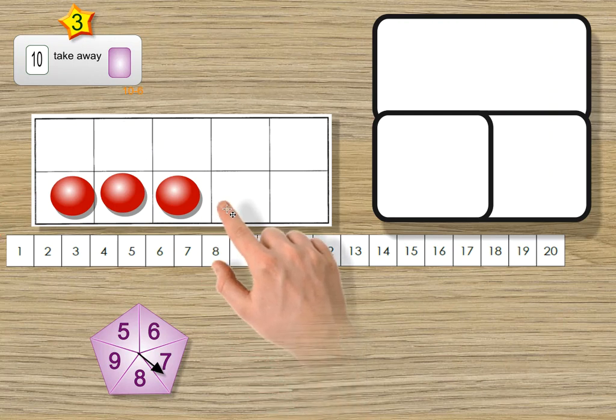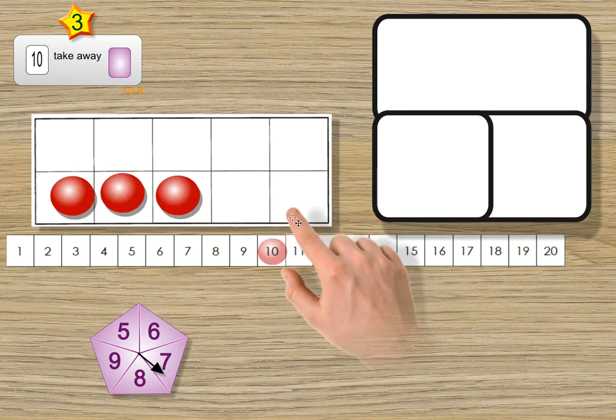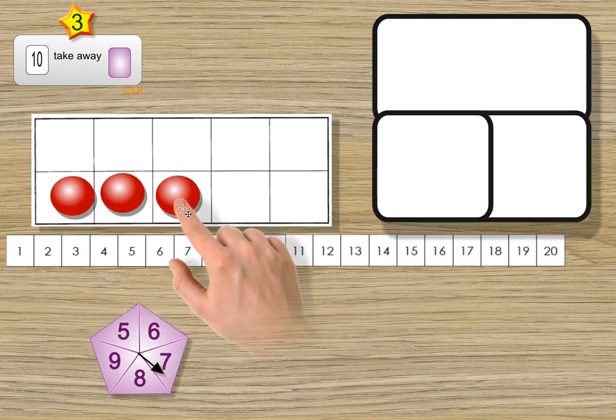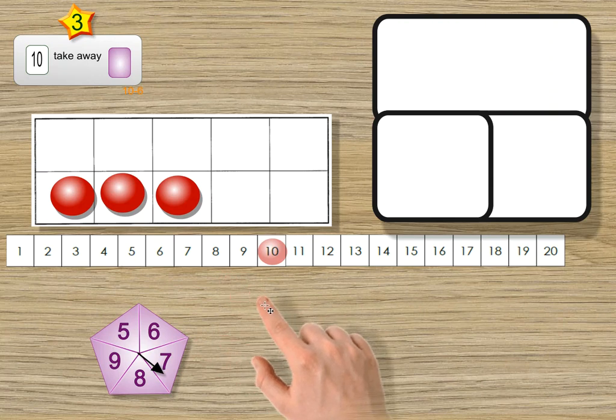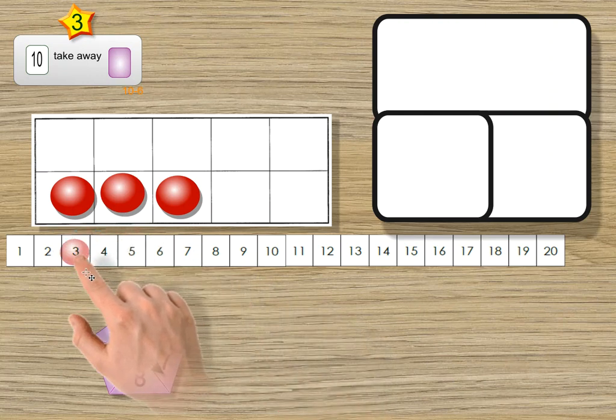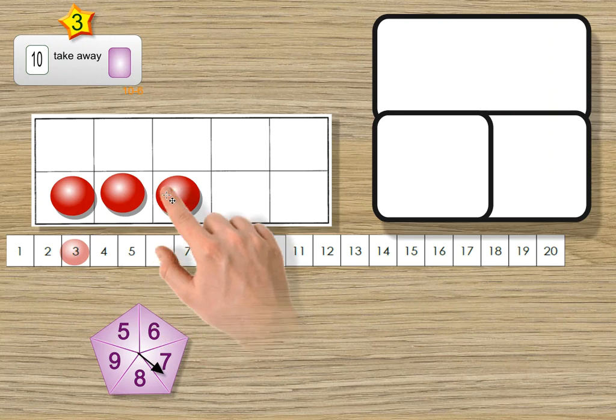Well, I took away 7. How many are remaining? How many left over? Well, let's see. 1, 2, 3, 4, 5, 6, 7. Now that looks like it matches. There's 3 here and 3 here.